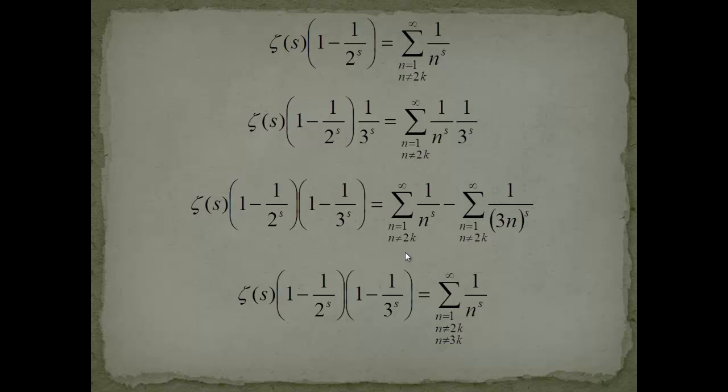Now while this is looking interesting, if you remember the product formula of Euler was this, the first prime times the second prime. Now we would suspect that the next part would be 1 minus 1 over 5 to the s. And actually if you do that you will.